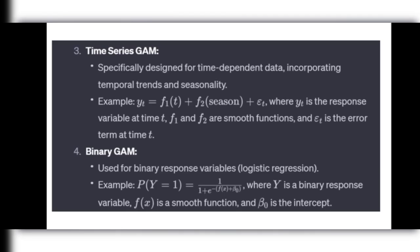The fourth type is the Binary GAM, used for binary response variables — essentially logistic regression. The example formula is: P(y=1) = 1 / (1 + e^(−f(x) + β₀)), where y is the binary response variable, f(x) is the smooth function, and β₀ is the intercept.